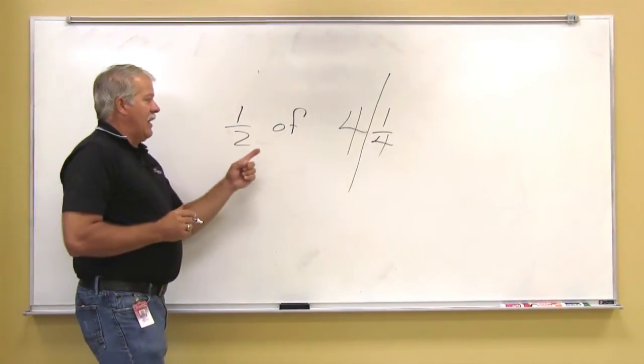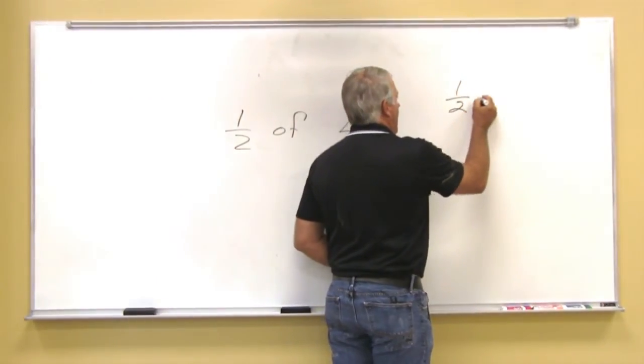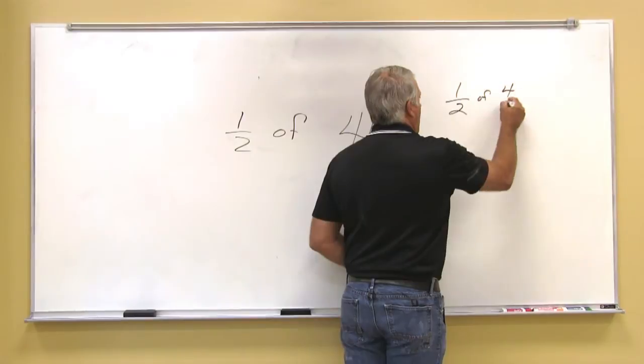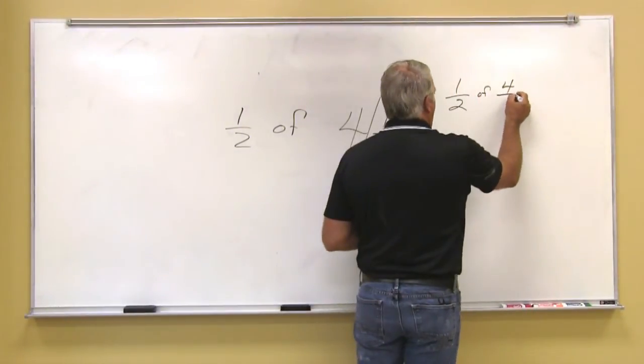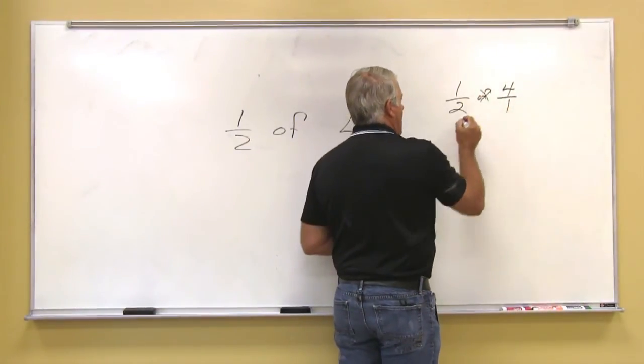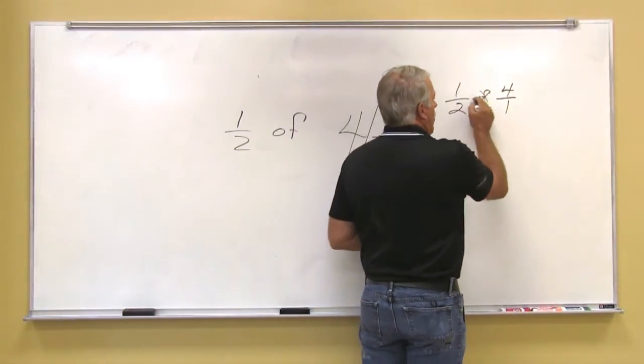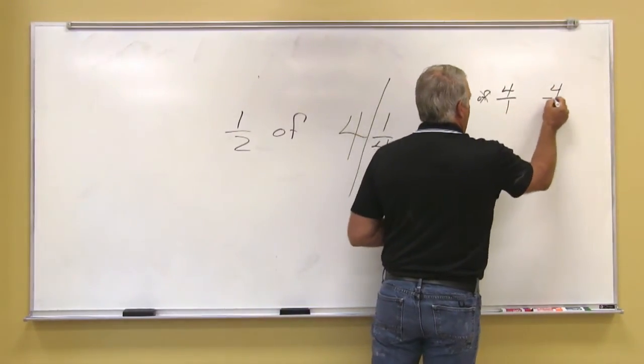If we're taking half of four, everybody knows that one half of four, if you write four as a fraction, is four over one. So once again, 'of' is times, so we take one times four is four, and two times one is two.